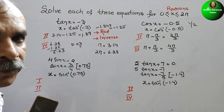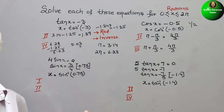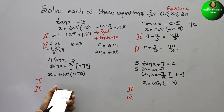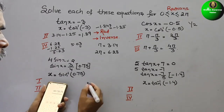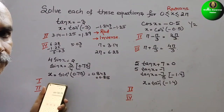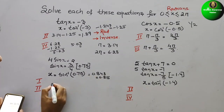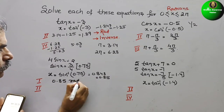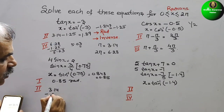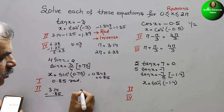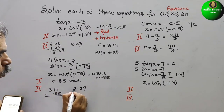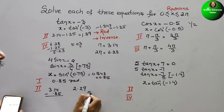Next, for sin inverse of 0.75: the calculator gives 0.848, approximately 0.85 radians — that is the 1st quadrant value. For the 2nd quadrant: 180 degrees minus 0.85, that is 3.14 minus 0.85, giving us 2.29 radians.